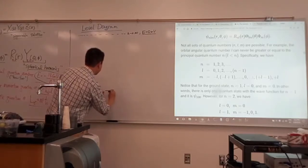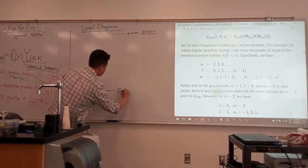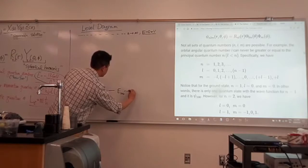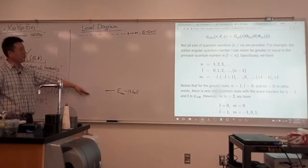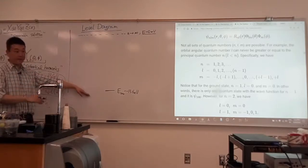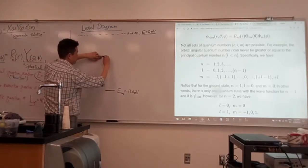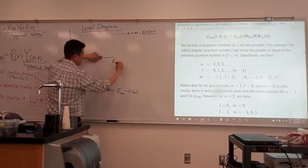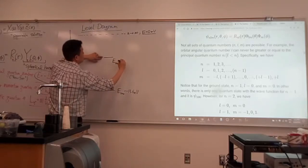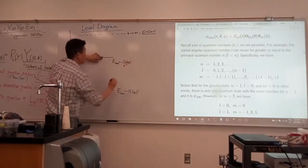There are different conventions, and that is not on a test or anything. E100 is equal to minus 13.6 eV. So, I'm going to only draw the next two values of n. The next level up, it's kind of a bit out of scale. I'll just throw it here. This stands for E200 is equal to minus 13.6 eV divided by 2 squared.